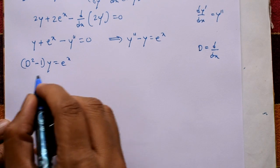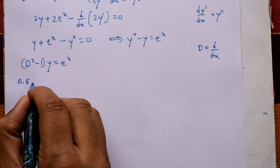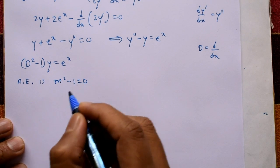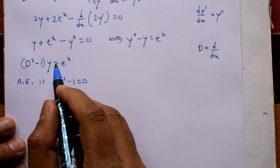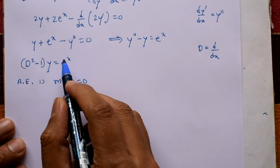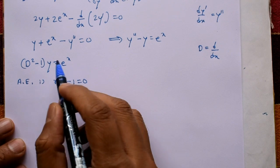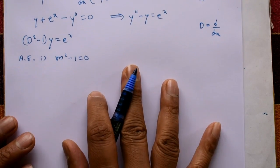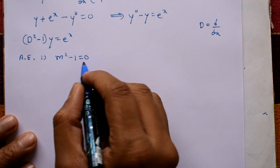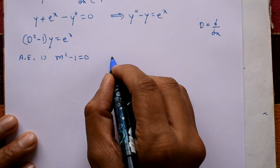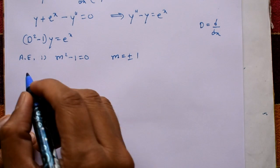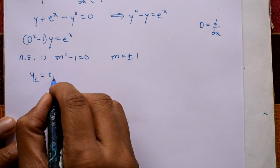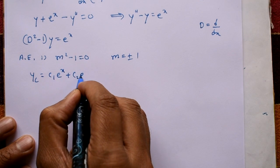Now find the general solution. First, the auxiliary equation is m² - 1 = 0, giving m = ±1. The general solution is complementary function plus particular integral. Since roots are real and different, the complementary function is c₁eˣ + c₂e⁻ˣ.